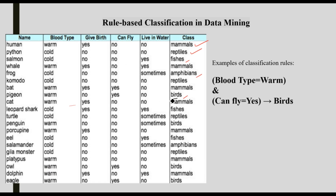Let's add the bird case. A bird: blood type is warm and can fly is yes, give birth is no. We create a rule — if blood type is warm and can fly is yes, then it belongs to the birds class. These are our if-then rules, and this is our consequent, or conclusion.